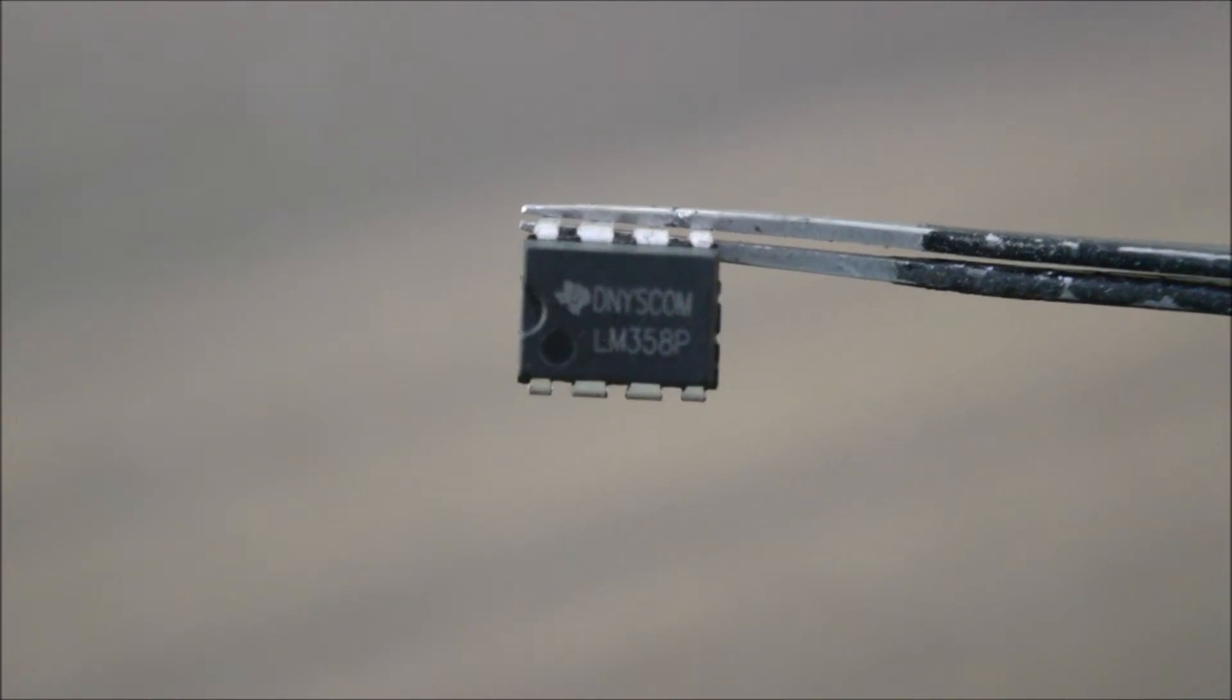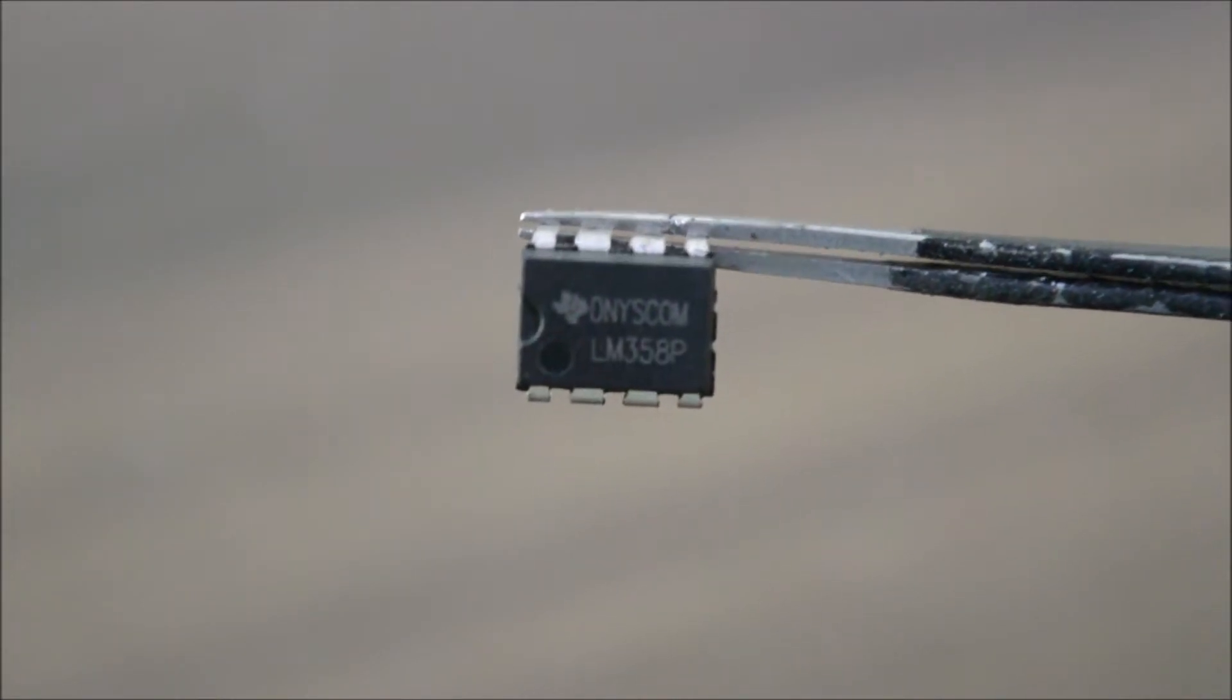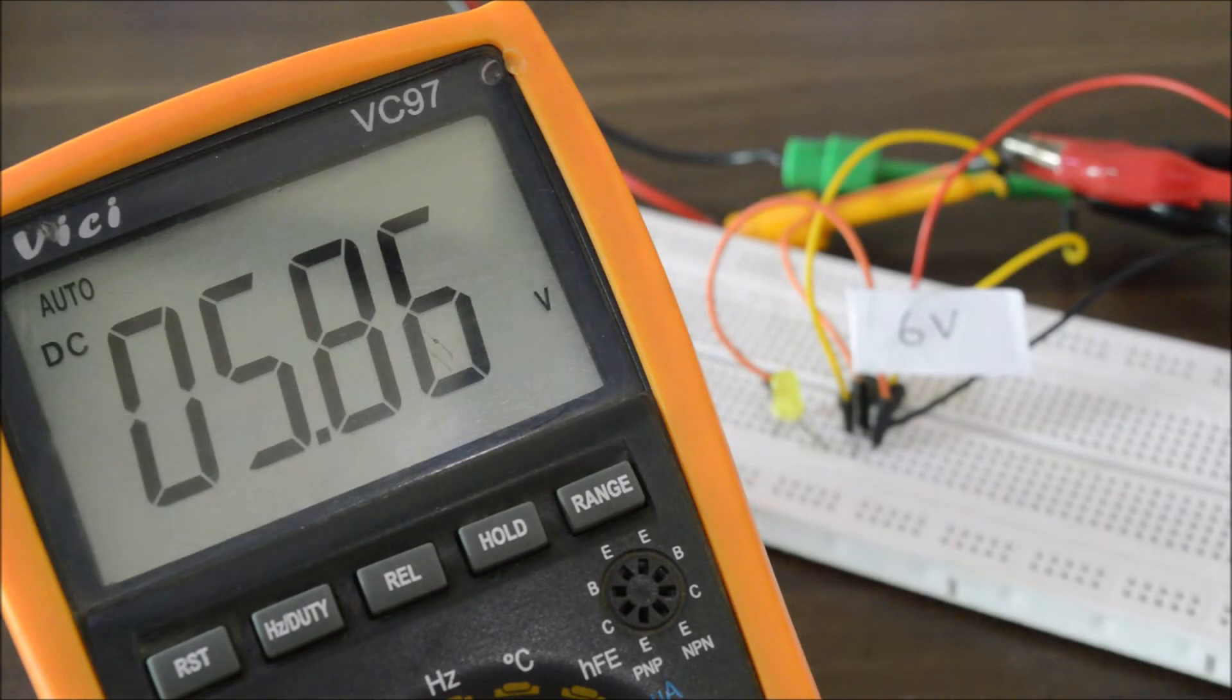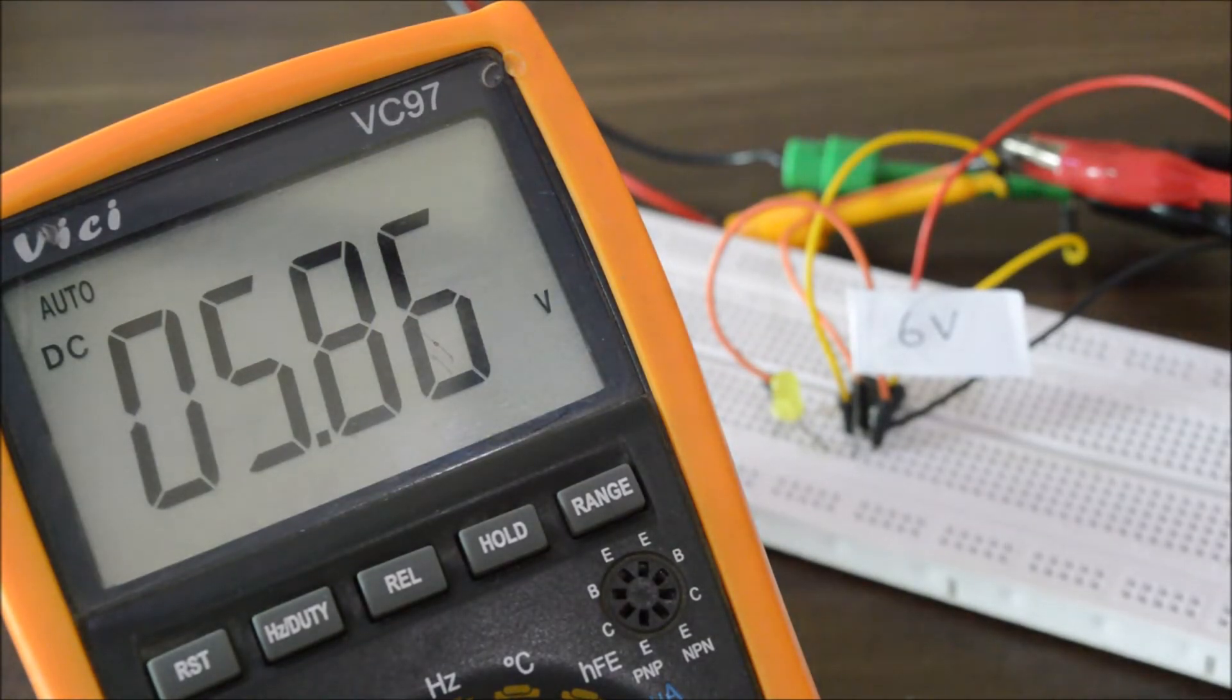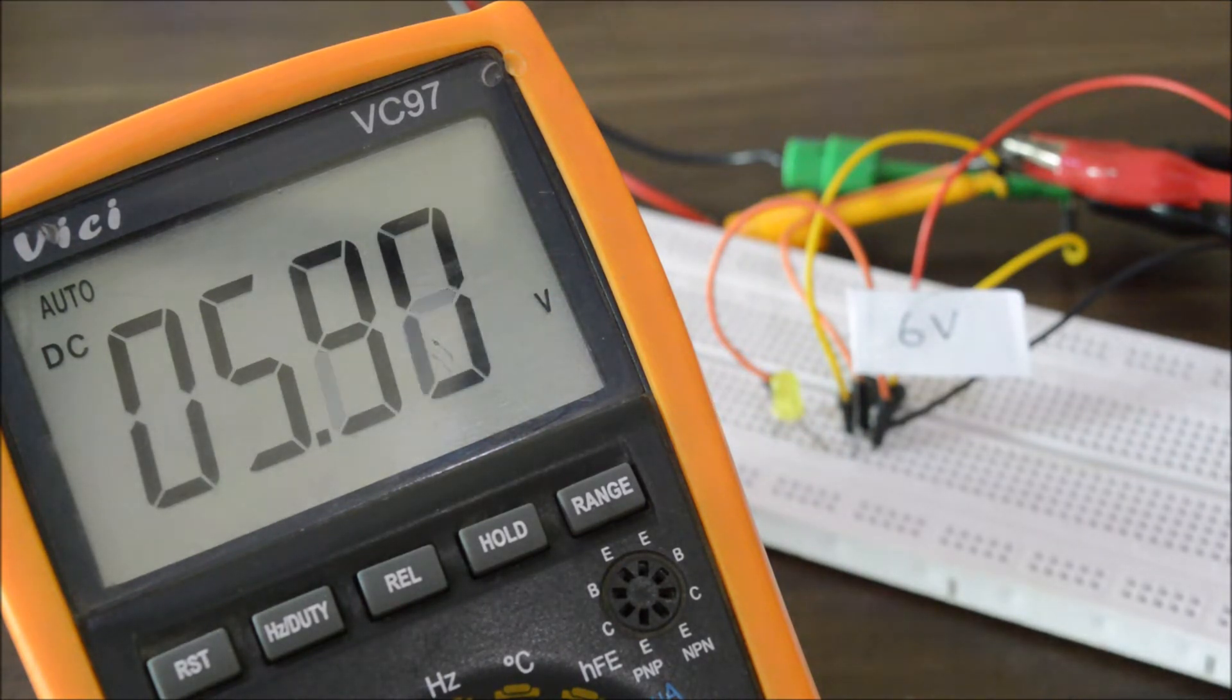Practically, I can easily demonstrate this by using a LM358 op-amp IC. I connected a constant voltage of 6 volts at the inverted input. So as you can see in the multimeter, when the voltage on the non-inverting input is greater than 6 volts, the output turns on. And that is basically our comparator.